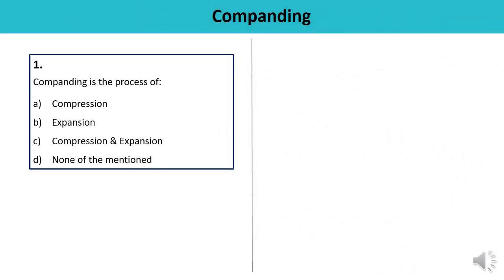First question: Companding is the process of what? Companding consists of two things — compressing and expanding. It is the combination of compression and expansion. The answer is C.